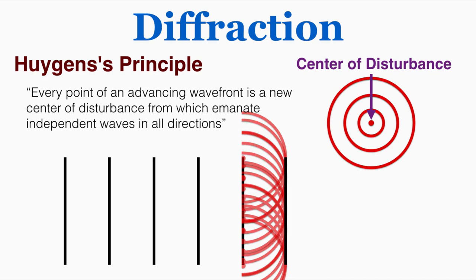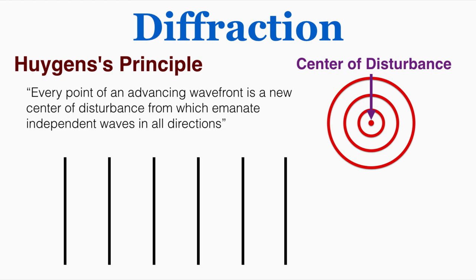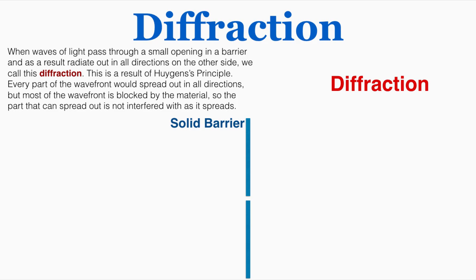Why do we care about this idea? Well, this can help us predict how waves will interact when they hit barriers. When waves of light pass through a small opening in a barrier and as a result radiate out in all directions on the other side, we call this diffraction. This is a result of Huygens principle — every part of the wavefront would spread out in all directions, but most of the wavefront is blocked by the material.